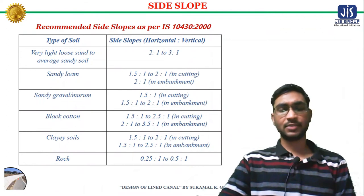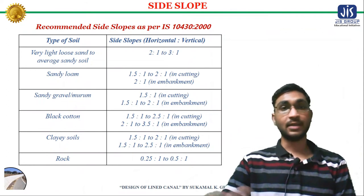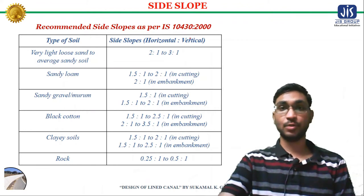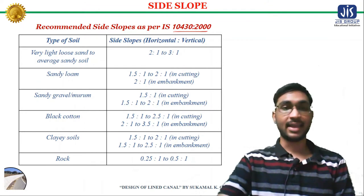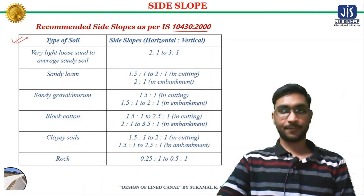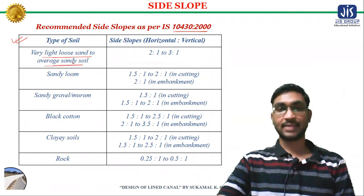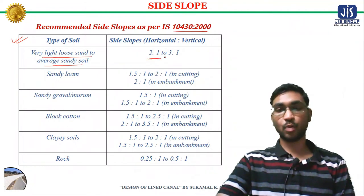The engineering properties of soil shall govern the design of outer side slopes of lined canals. The recommended side slopes according to Indian Standard 10430:2000 are given in a table. If the soil is very light loose sand or average sandy soil, then the side slope for lined canals should be 2:1 to 3:1 for both cutting and embankment.